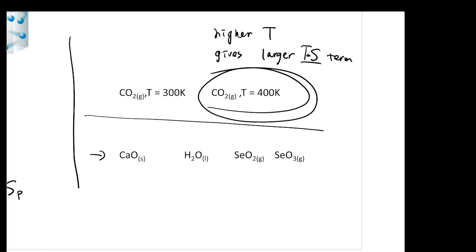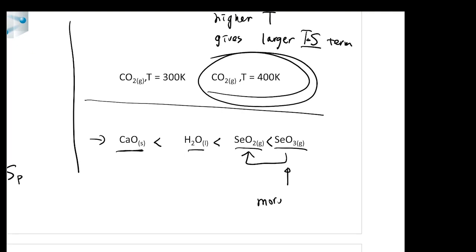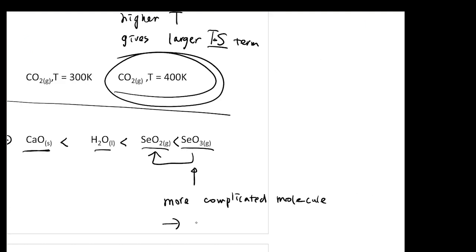In general, gas has larger entropy than liquid, which has larger entropy than solid. So the solid form should be the smallest, then the liquid. Now we have two remaining: SeO₂ gas and SeO₃ gas. To determine which has larger entropy, look at which species has more atoms. More atoms means more ways to distribute energy. Since SeO₃ has more atoms than SeO₂, SeO₃ has larger entropy. The take-home message: a more complex molecule has higher entropy.